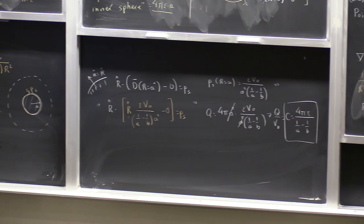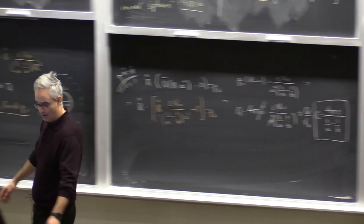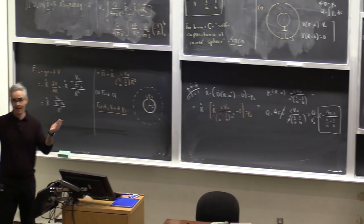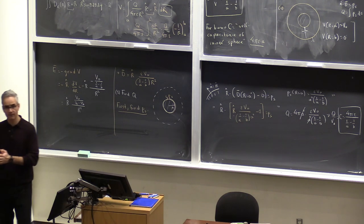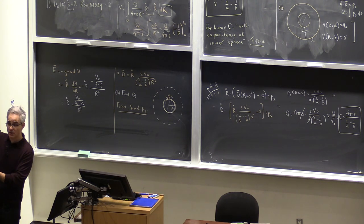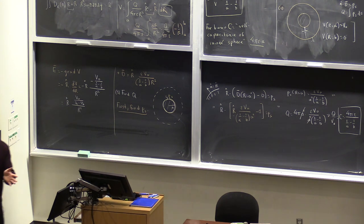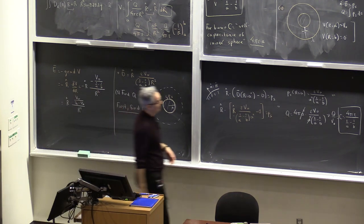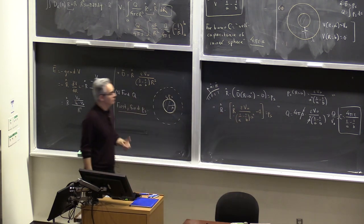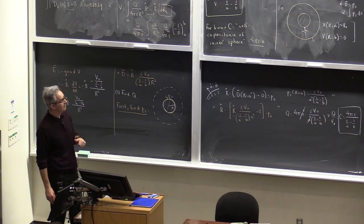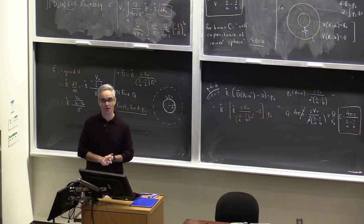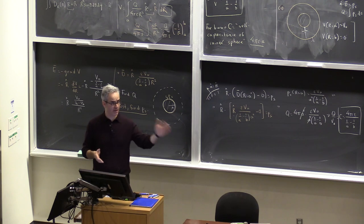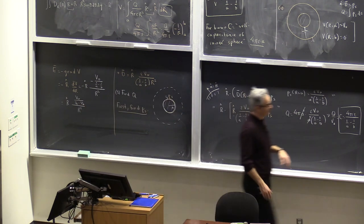I did find the same result. The point is that I could arrive at the same result through two different paths. Both are based on Q over V being constant — you either set Q and find V, or set V and find Q. Whichever you choose depends on your comfort and whether there are symmetries that allow you to use Gauss's law. Without symmetry, the first path may not be feasible, and you'd need the Laplace equation approach.